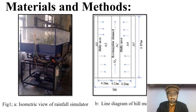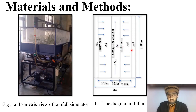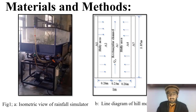Here is the isometric view of the rainfall simulator line diagram, and the second diagram is the line diagram of the hill model. Areas A1 and A5 were the same flat surfaces. A2 and A4 were the same inclined surfaces at 27 degrees. A3 is the rectangular channel where, after precipitation starts, water from all catchment areas moves into this channel and flows in a longitudinal direction.